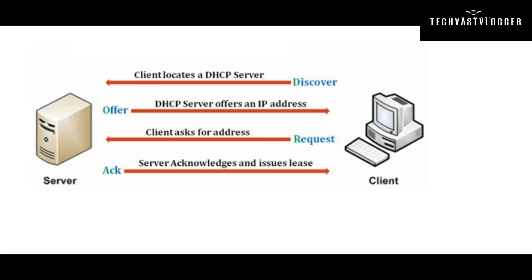Once again, as soon as the client knows that there is a DHCP server available, the client again asks for the IP address and it sends the request for the IP. As soon as the server receives the request, it acknowledges that request and issues a lease IP address to the client machine. There are some other options as well available within the DHCP which we are going to talk about when we install DHCP on this 2008 server.